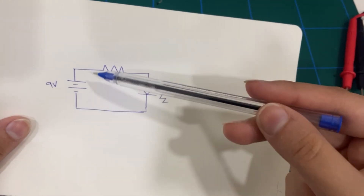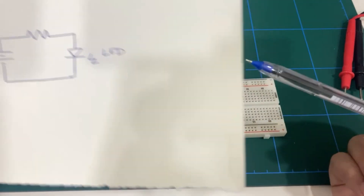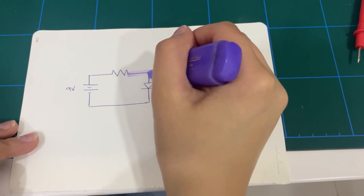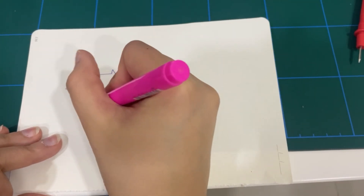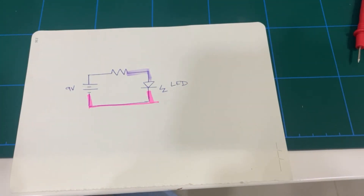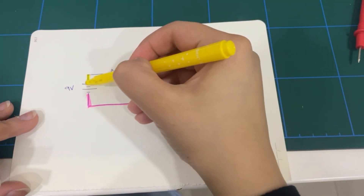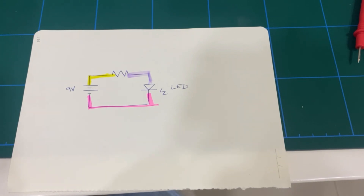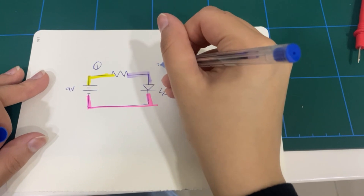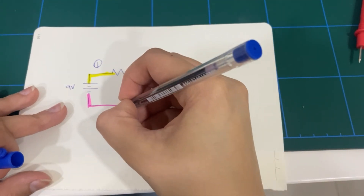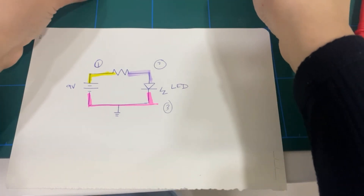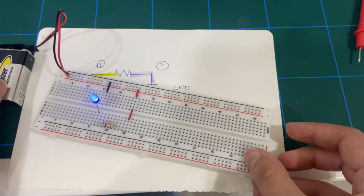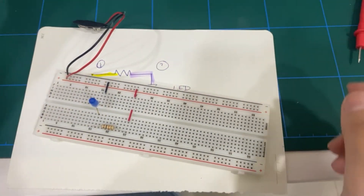Now let's translate the circuit diagram that includes an LED, a resistor, and a power supply to the breadboard. To do that, we need to identify the nodes to make it easier to implement the circuit. When we look at the circuit diagram, one node starts at one end of the resistor and ends at one end of the LED. Another node starts at the negative terminal of the power supply to the other end of the LED. So we have a total of three nodes.